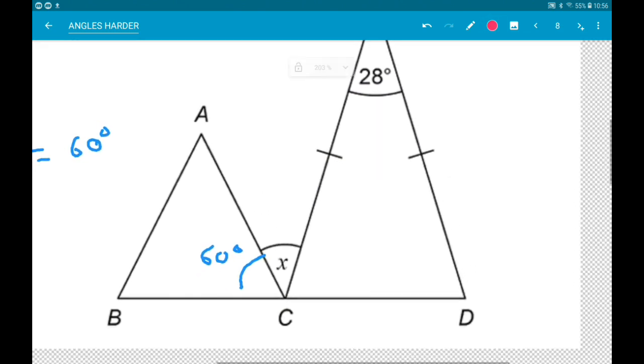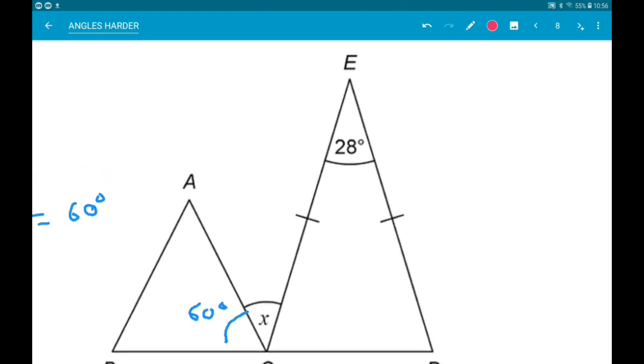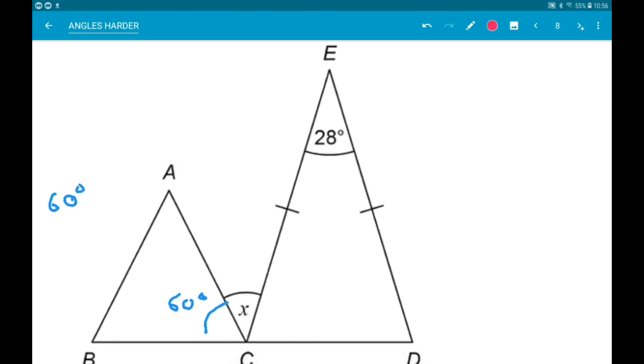Okay, now in triangle CDE, it's isosceles which means these two angles down left are equal. So if we do 180 minus 28 we get 152 degrees. And then if we divide that by 2 we get 76 degrees.